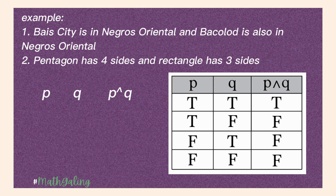Example 1: 'Bae City is in Negros Oriental.' We all know that Bae City is part of Negros Oriental, so that is true. And 'Bacolod is also in Negros Oriental.' We all know that Bacolod is in Negros Occidental, so that is false. Since we use the logical operator AND, the truth value will be false.